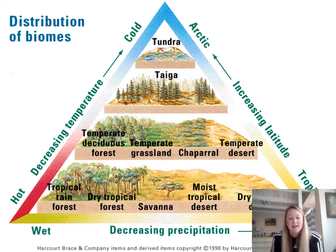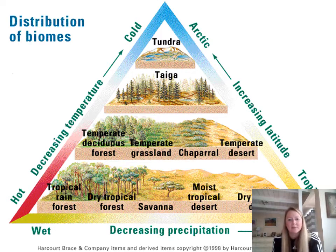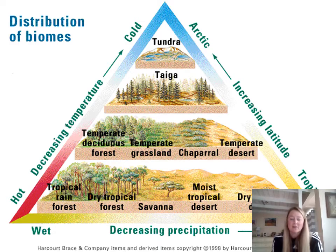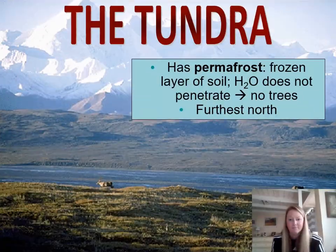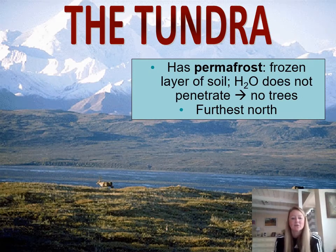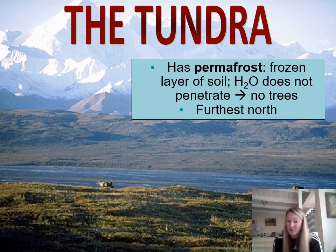This diagram shows all the main biomes here on Earth and how they are distributed based upon precipitation, temperature, and latitude. The first biome we're going to talk about, at the highest latitude and the coldest, is the tundra.